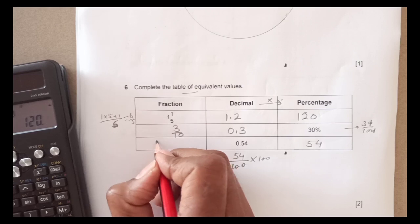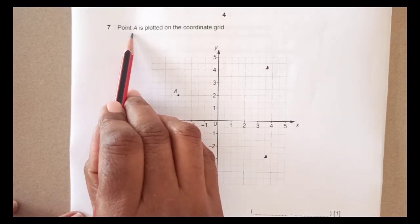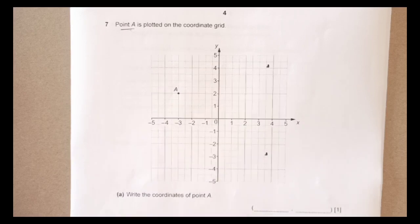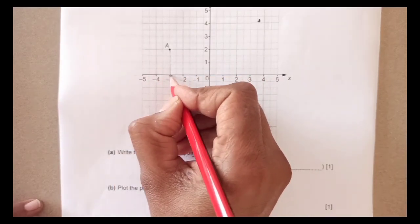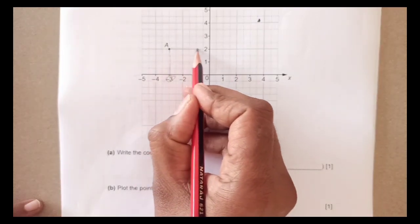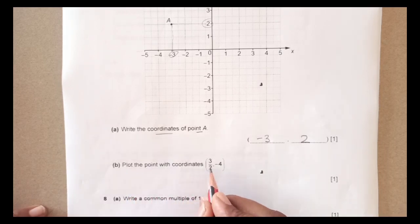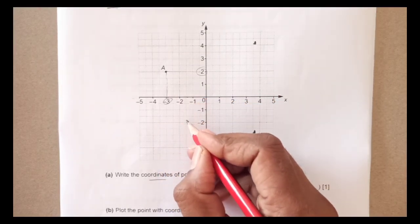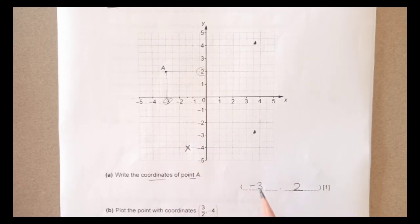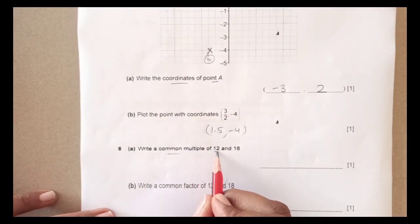Question 7: point A is plotted on the coordinate grid. Write down the coordinates of point A. Along the x-axis it is at negative 3, and along the y-axis it is at 2, so the coordinates are (−3, 2). Then plot the point (−1.5, −4): 1.5 is half of 3, so x is −1.5 and y is −4. That gives us point B.